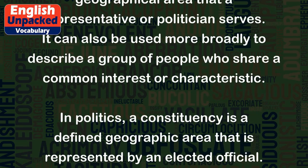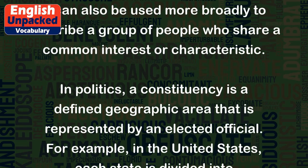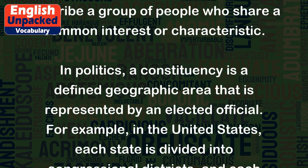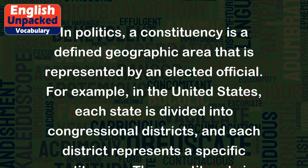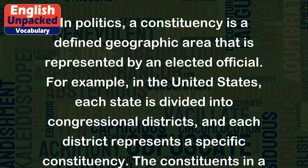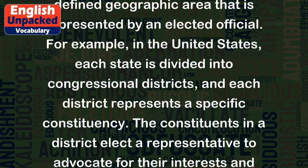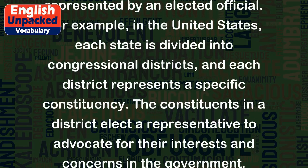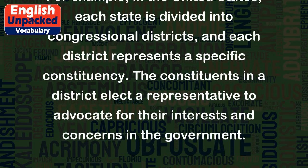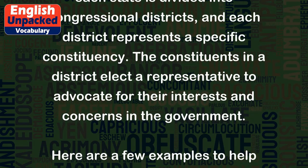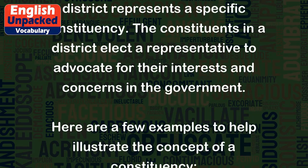In politics, a constituency is a defined geographic area that is represented by an elected official. For example, in the United States, each state is divided into congressional districts, and each district represents a specific constituency. The constituents in a district elect a representative to advocate for their interests and concerns in the government.